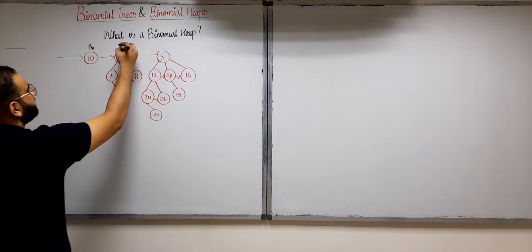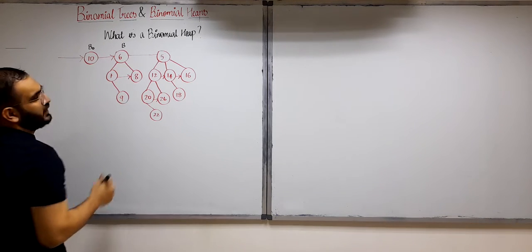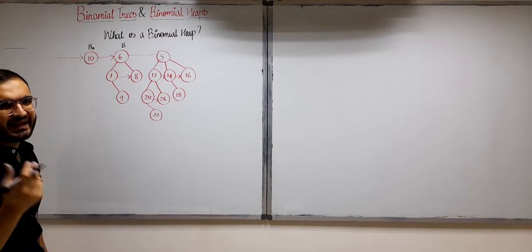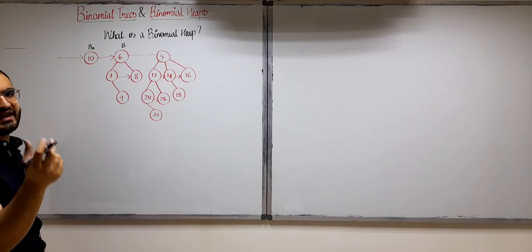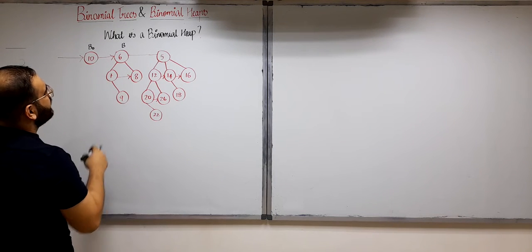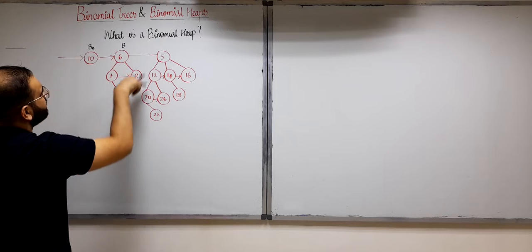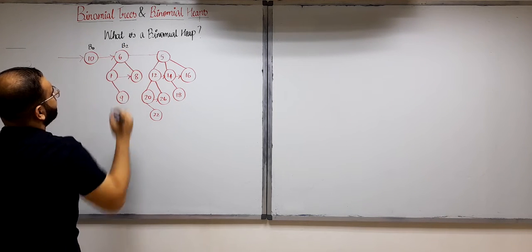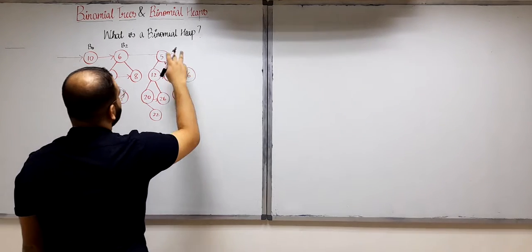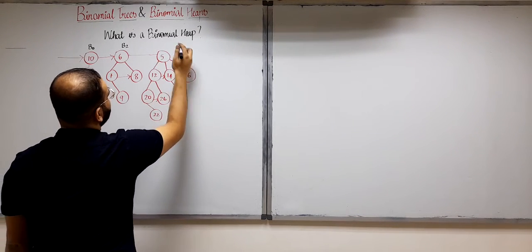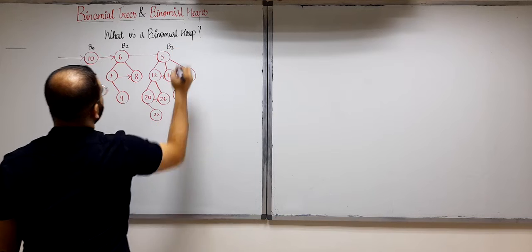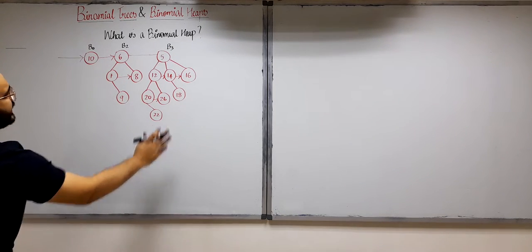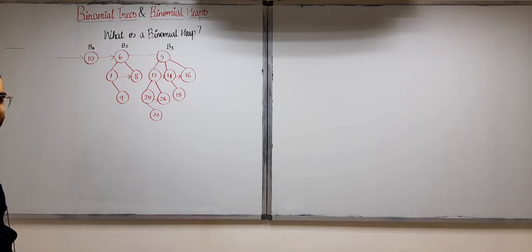And this is actually B2. How do you find out the order? We know that in a BK tree, the root has K children. So how many children does this root have? It has two. So this is B2. And in this case, the root has three children, so we know this is B3. So as you can see, this complete thing with these three binomial trees is a binomial heap.